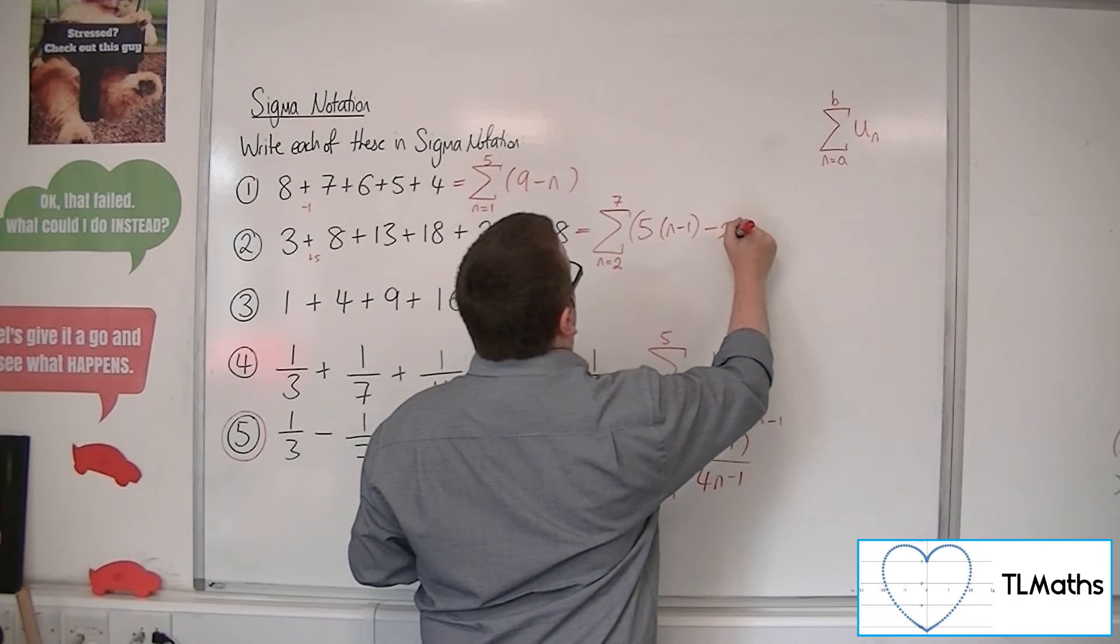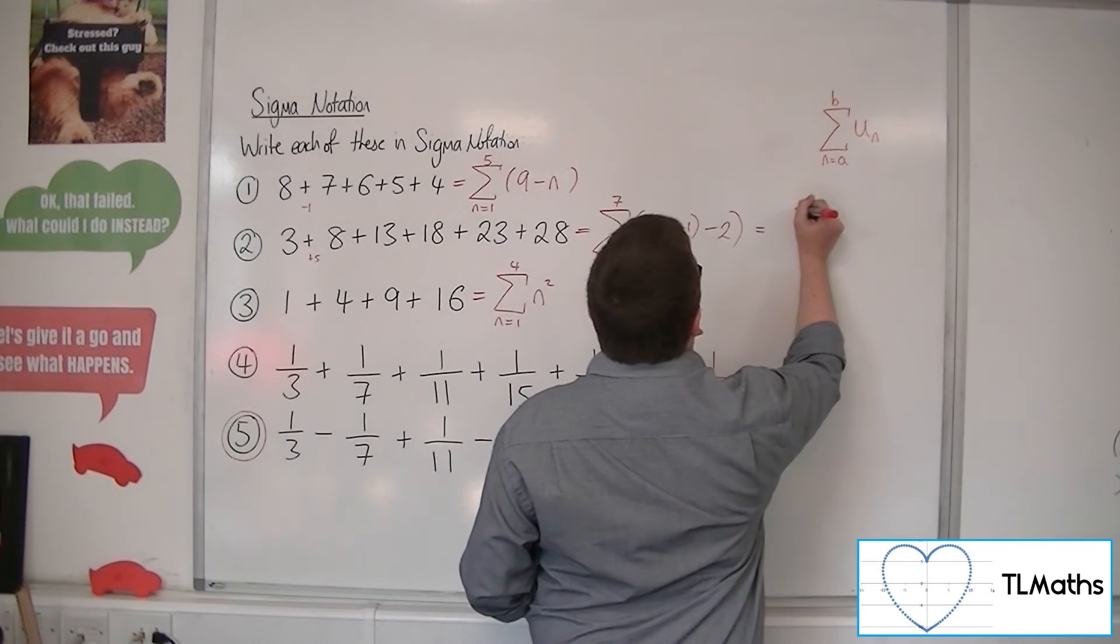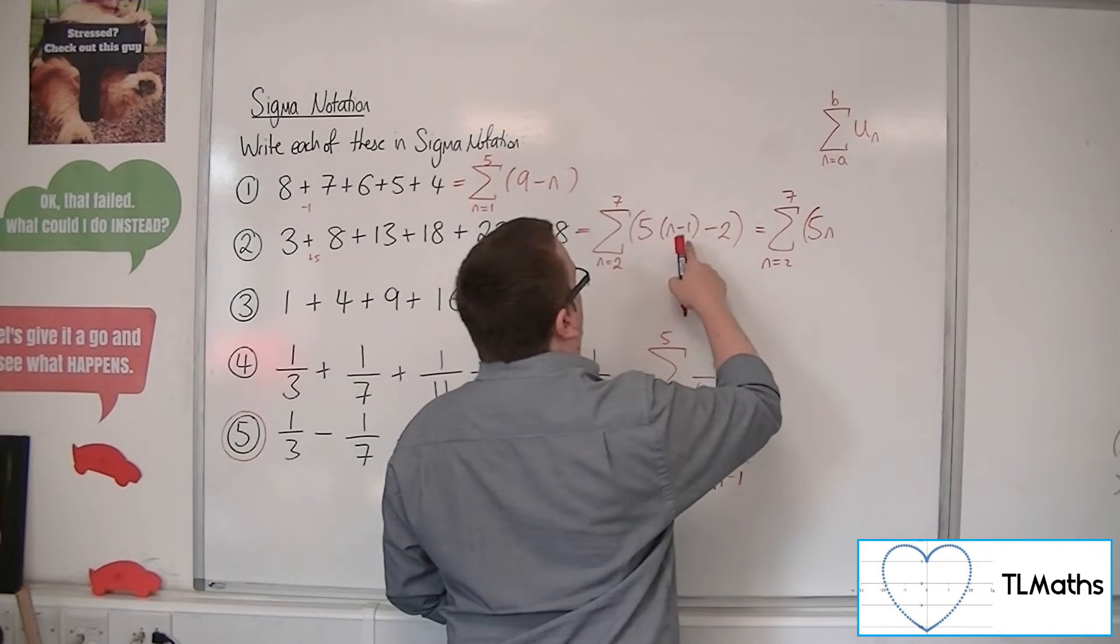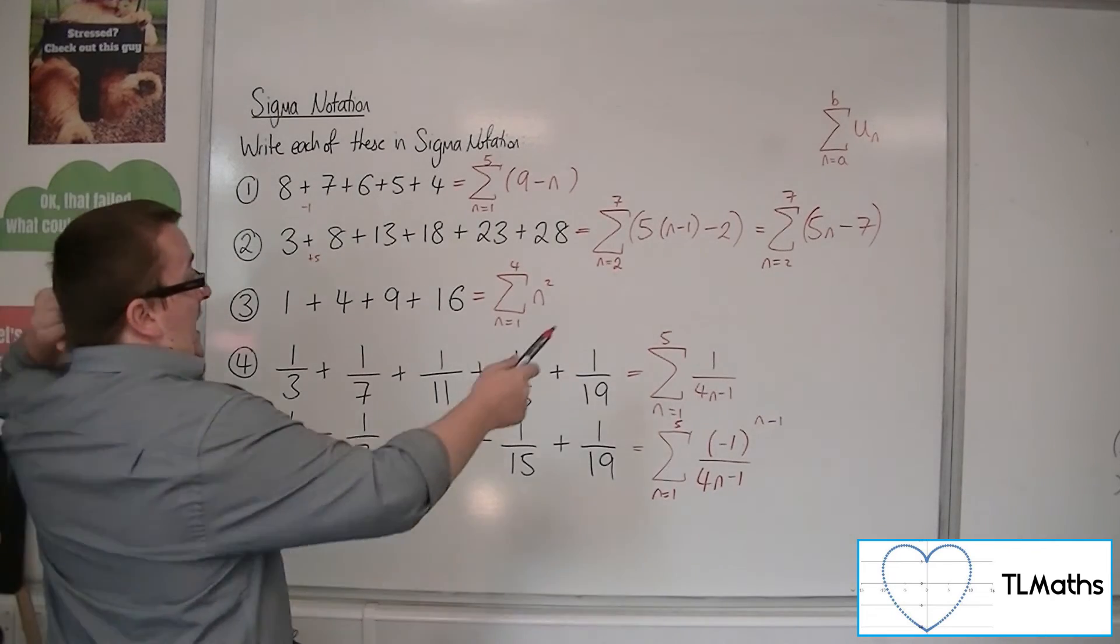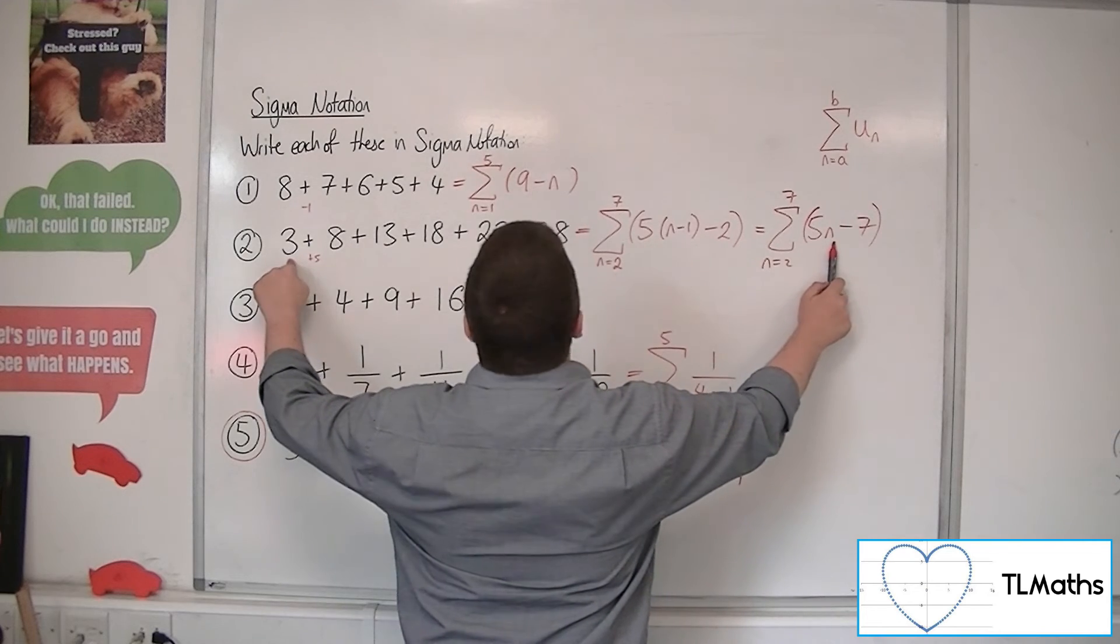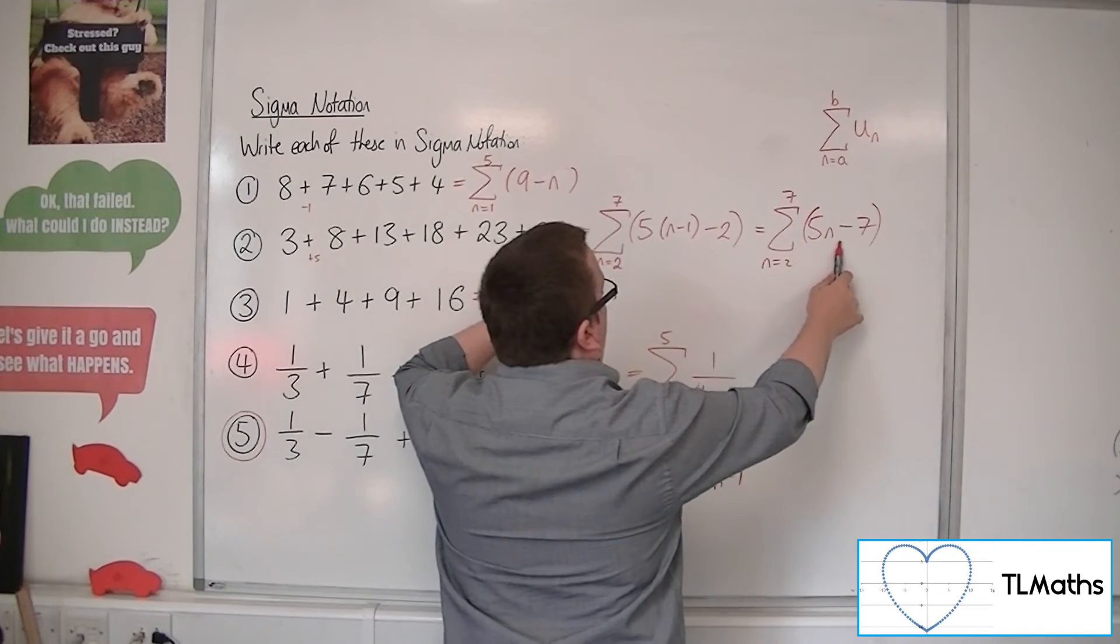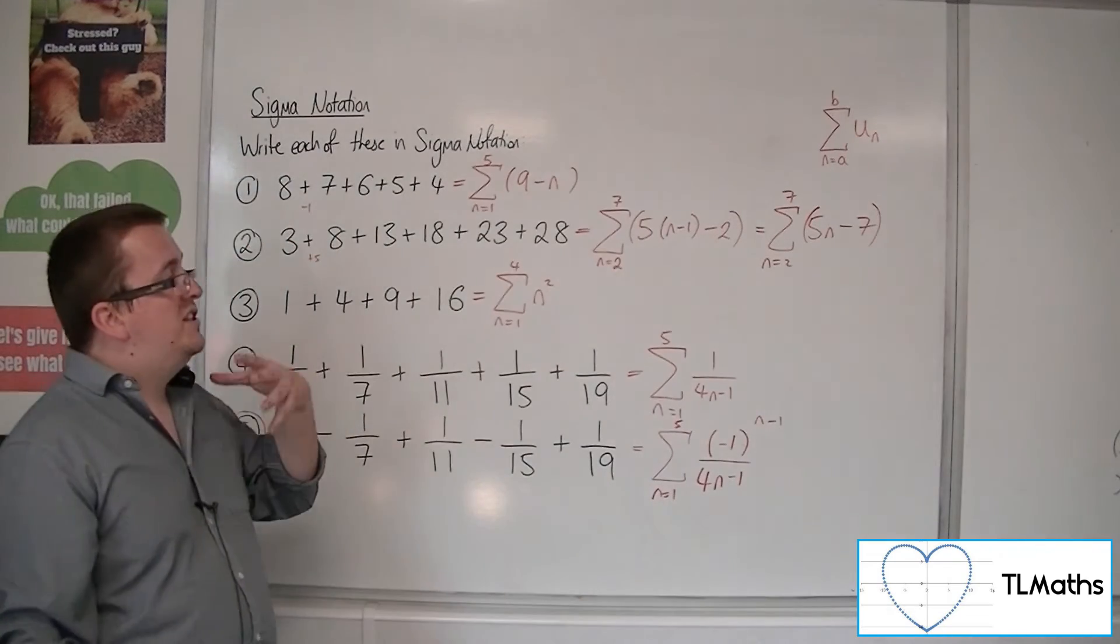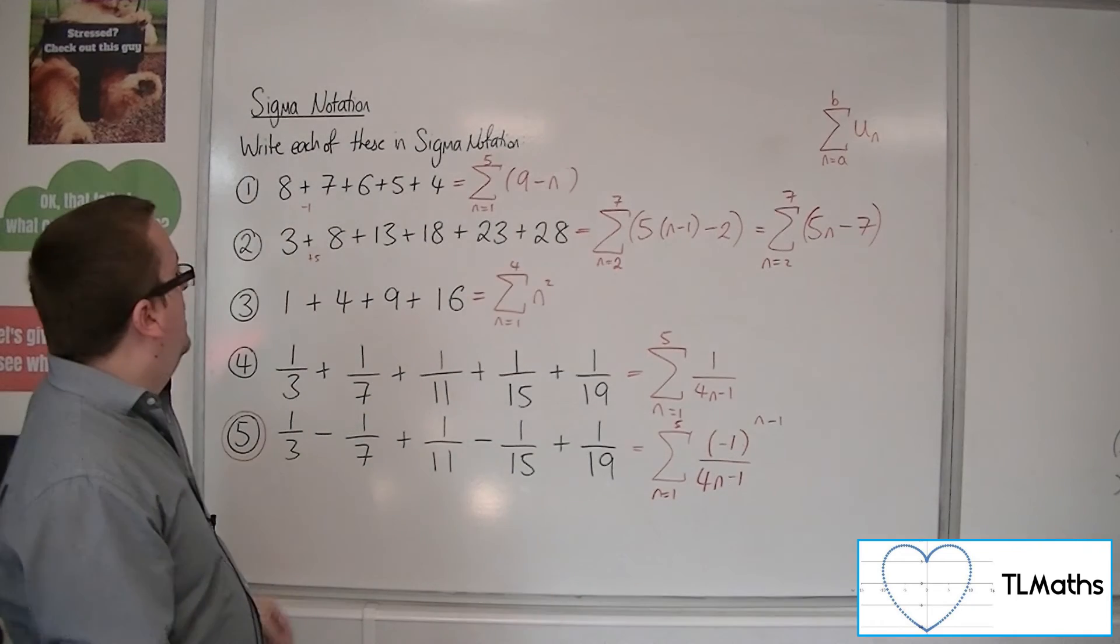So I could have n minus 1. And what did we have? We had take away 2, didn't we? Because now what you've got is if you simplify that, 5n, we're going to have a minus 5 take away 2, so a minus 7. So 5n minus 7. So when n is 2, you get 10 take away 7, which makes the 3. When n is 3, you get 15 take away 7, which makes the 8. So that has precisely the same value as we had before, and you could say it completely describes that series as well.